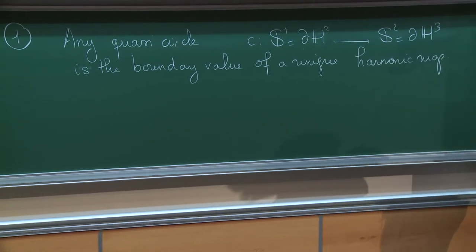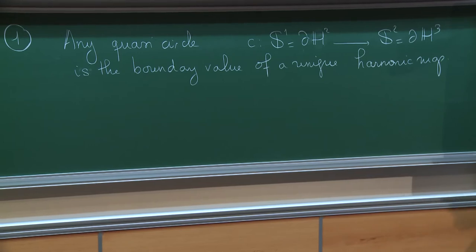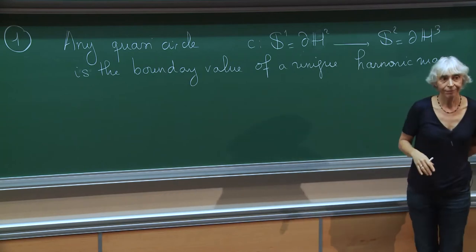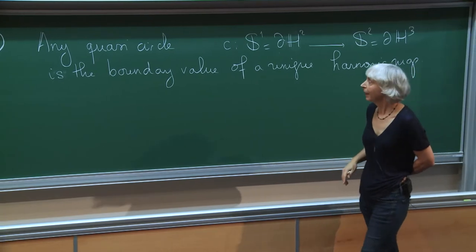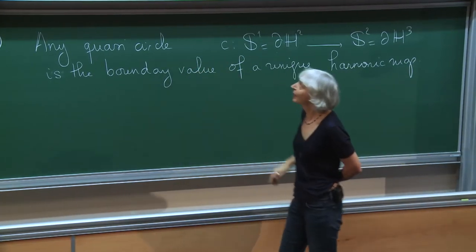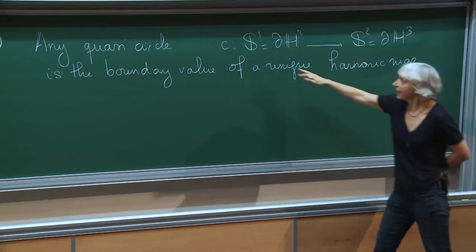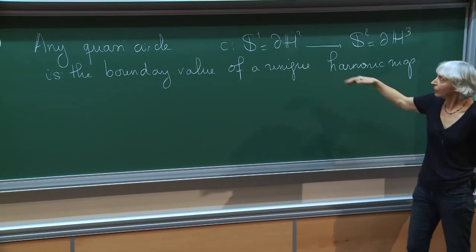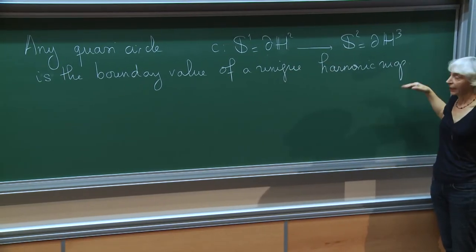So there are lots of equivalent definitions for quasi-circles which can have many different flavors, but the one which is easier for me to use today is to say that a quasi-circle is the map from S¹ to S² that is the boundary value of a quasi-isometric map, and then it is the boundary value of a unique harmonic map.